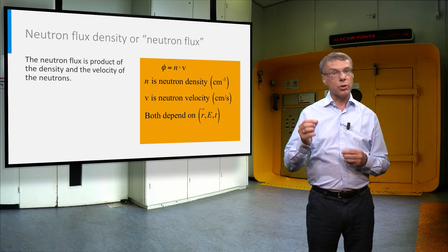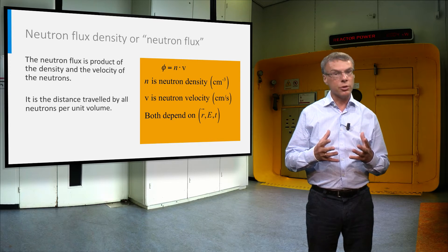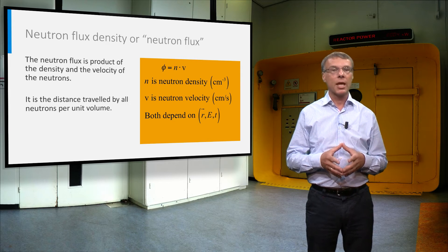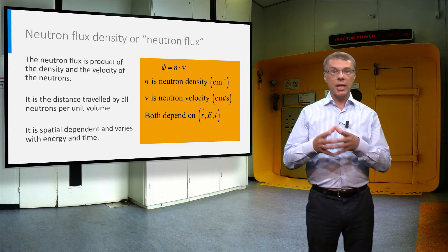Therefore it can be viewed as a total distance traveled by all neutrons in a unit volume per unit time. Typically the neutron flux density is depending on space, energy and time.